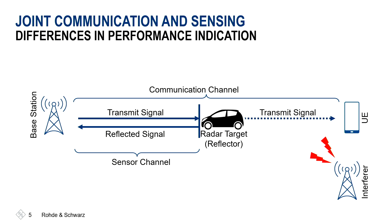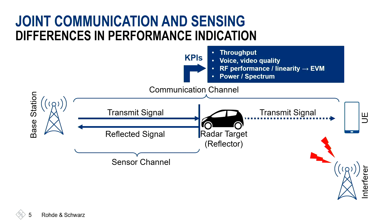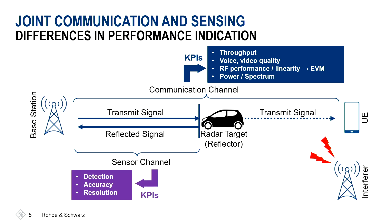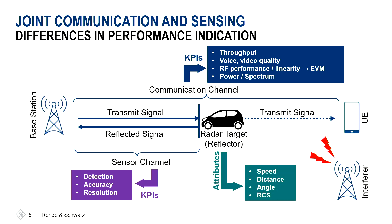Next, let's discuss the test and measurement aspects. On this slide you can see a setup consisting of a base station communicating to an end user device, with an object like a car in the middle. In the communication world we are interested in KPIs like throughput, video or voice quality on the application layer, and RF performance metrics like EVM, power, or spectrum. In the radar world we are more interested in detection, accuracy, and resolution, with attributes connected to the object like speed and distance. Interference may also play a role.